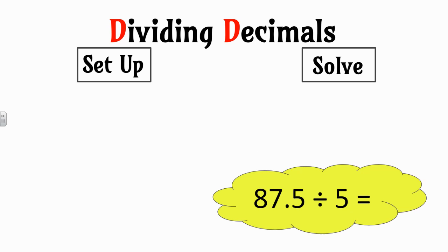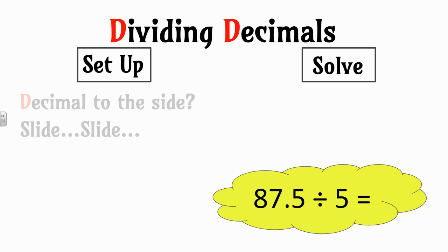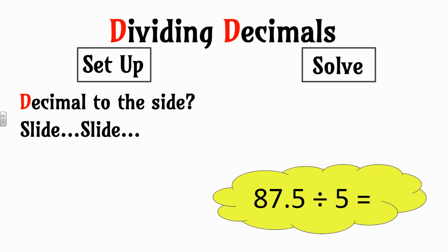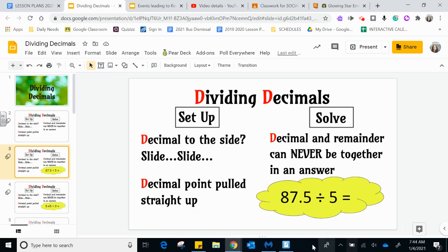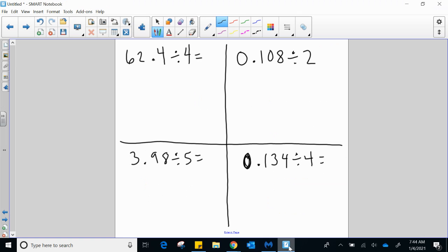I'm going to go ahead and model this for you. Here's an example of a dividing decimals problem. When it comes to the setup, decimal to the side, slide, slide. There won't be a decimal to the side here — I'll show you that in a second. And also the decimal point gets pulled straight up.